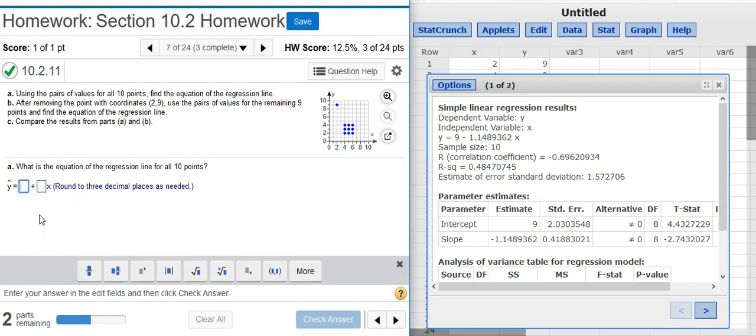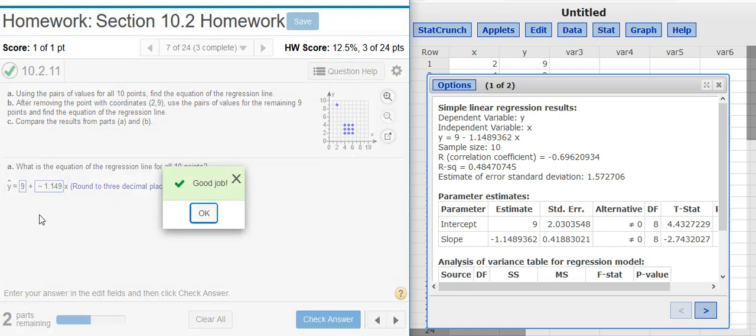So the first value here is my intercept. The next value—notice I'm carrying the negative sign with me. Good job.